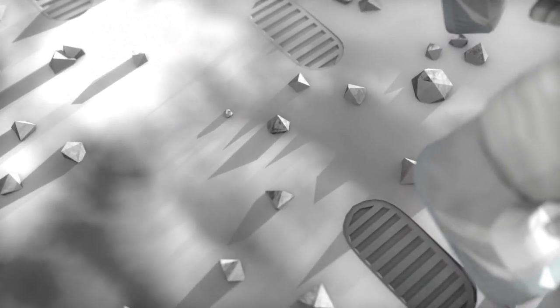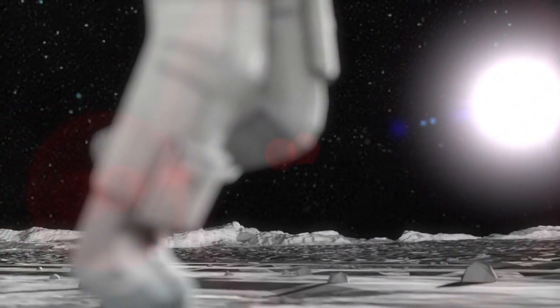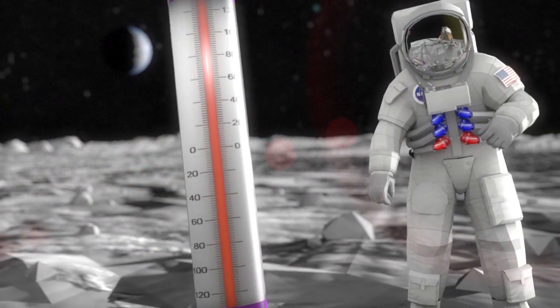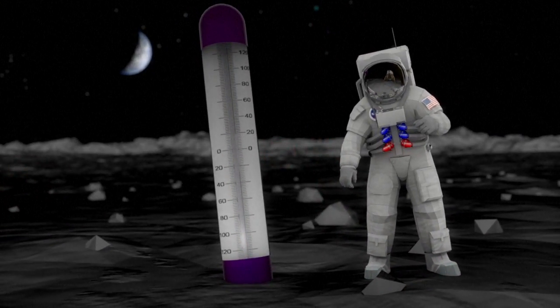It has an inhospitable environment, a weak atmosphere offering no protection from the Sun's radiation or from meteoroids. Surface temperatures range from 127 degrees Celsius in the Sun to minus 173 degrees Celsius in darkness.